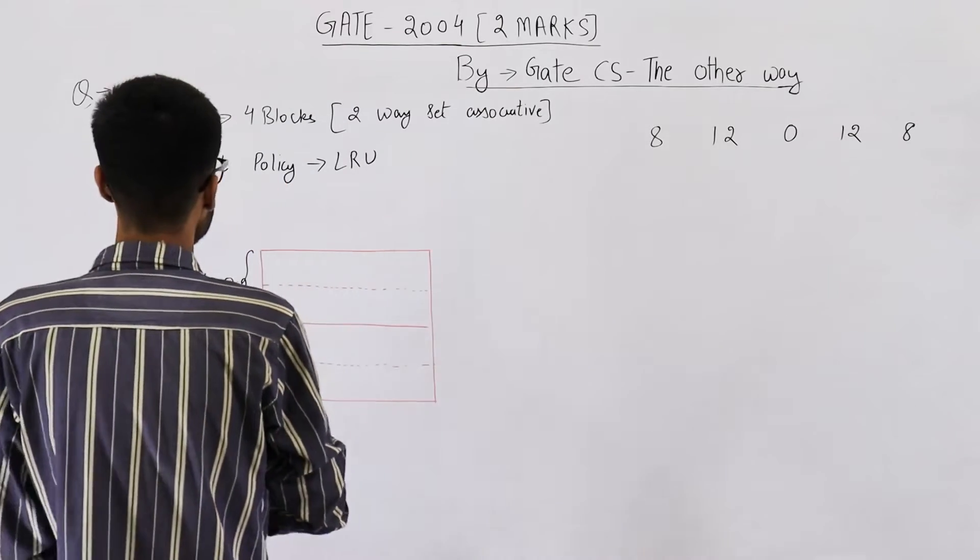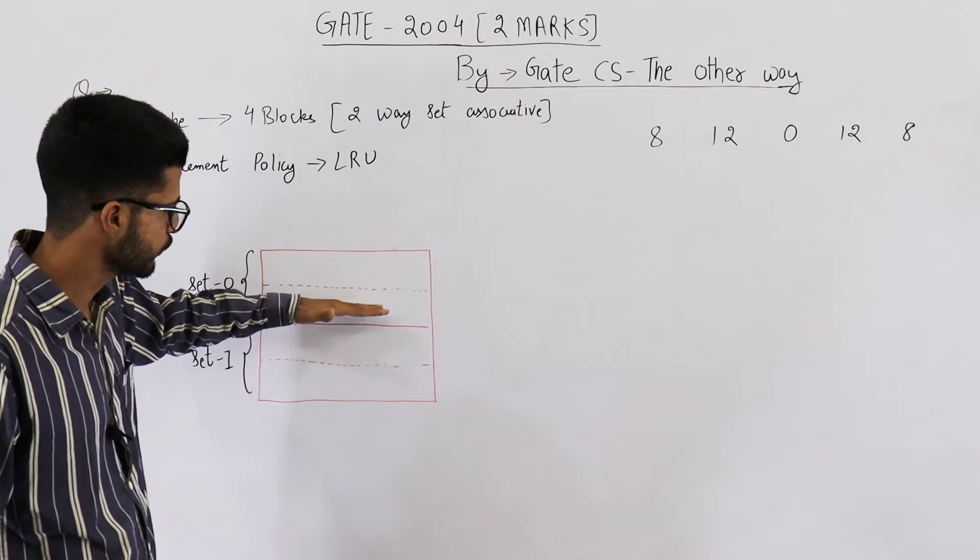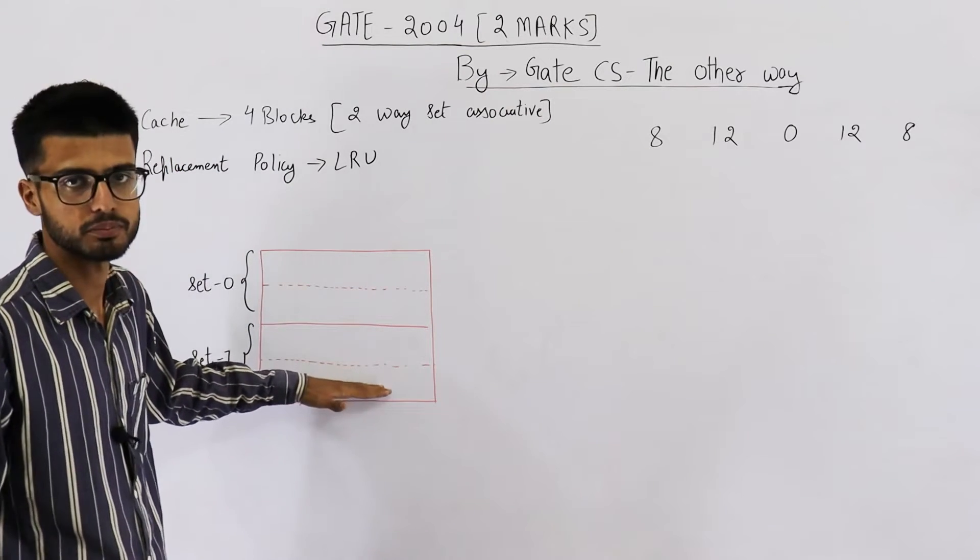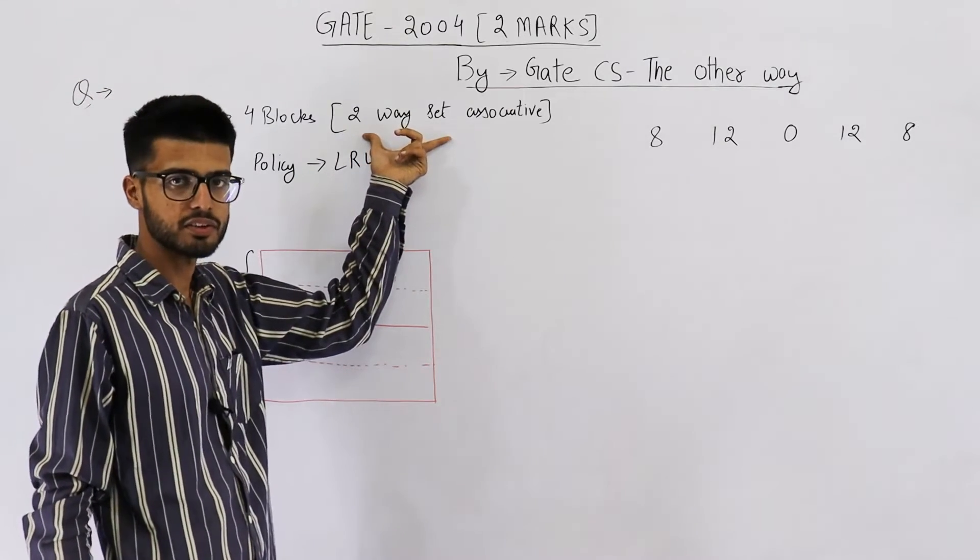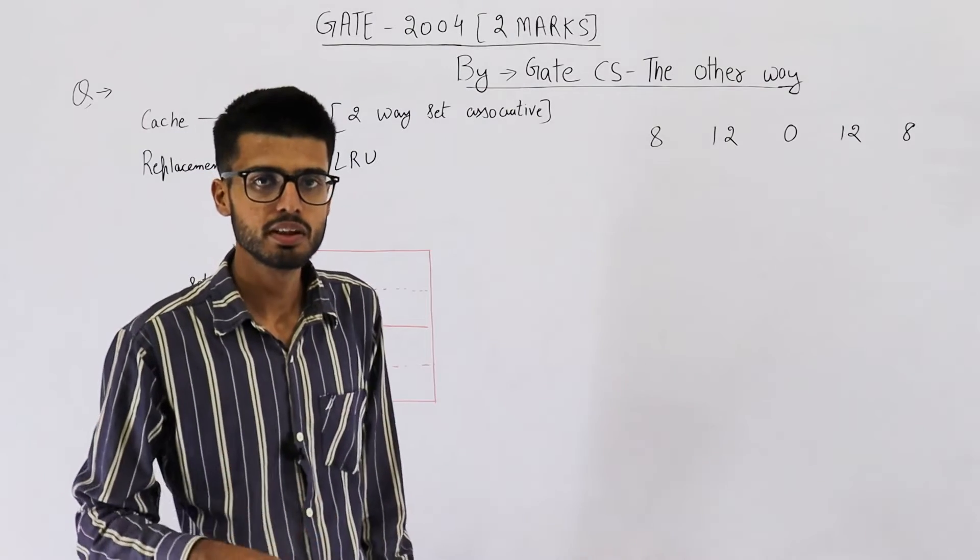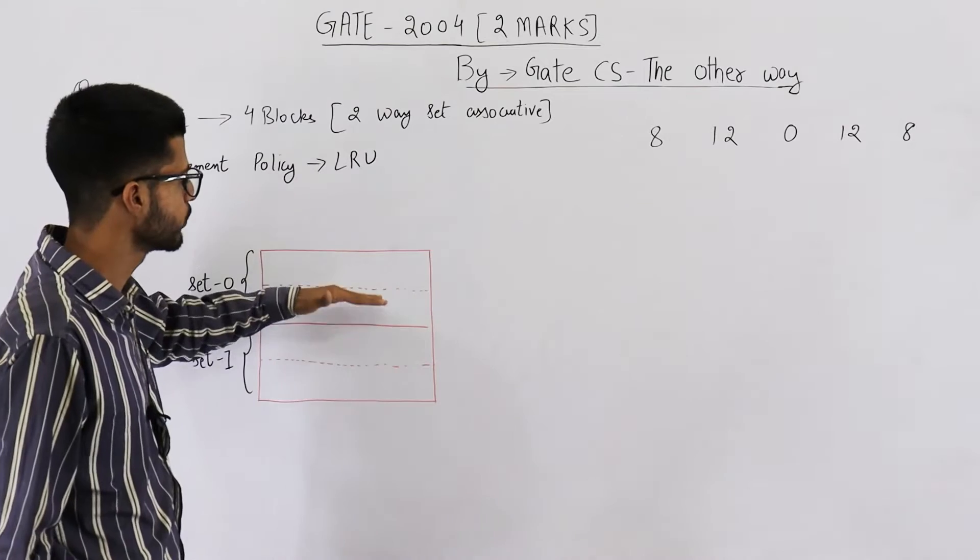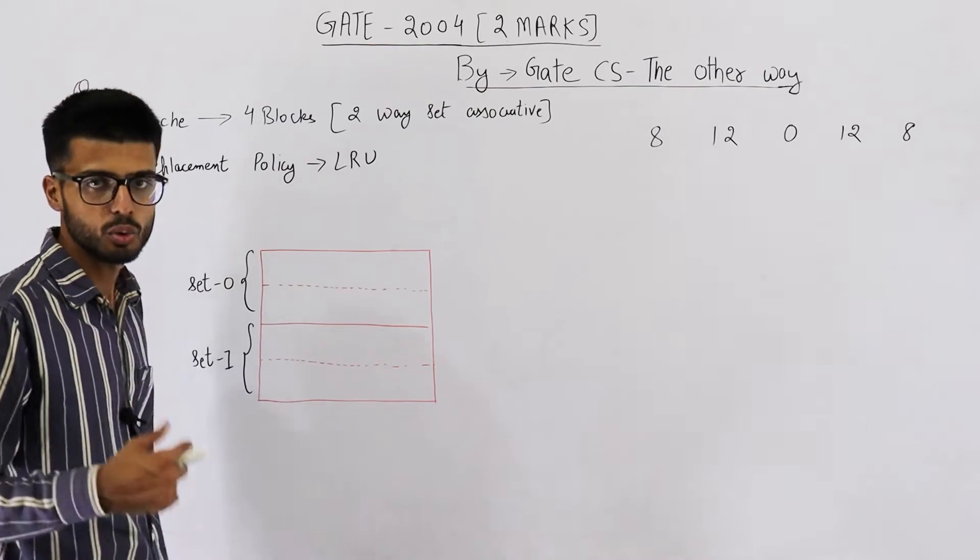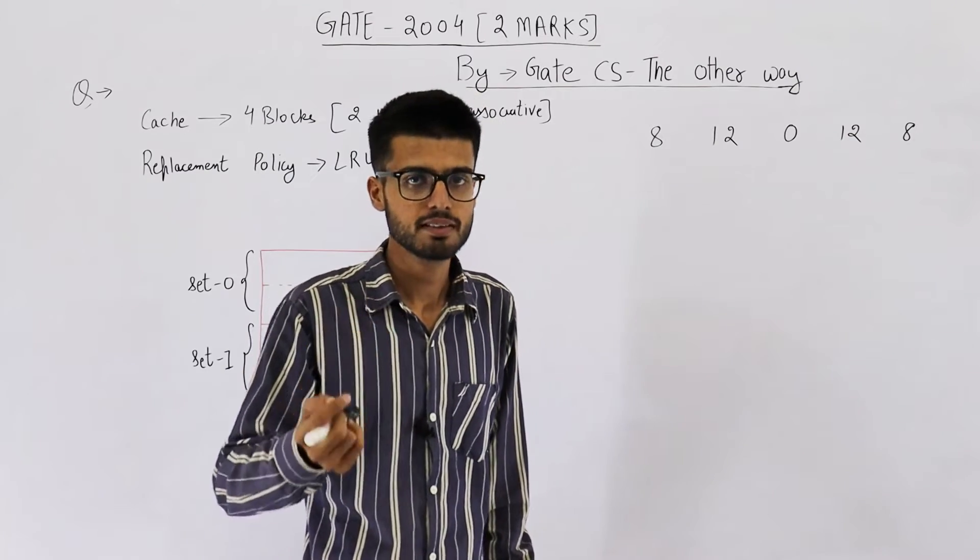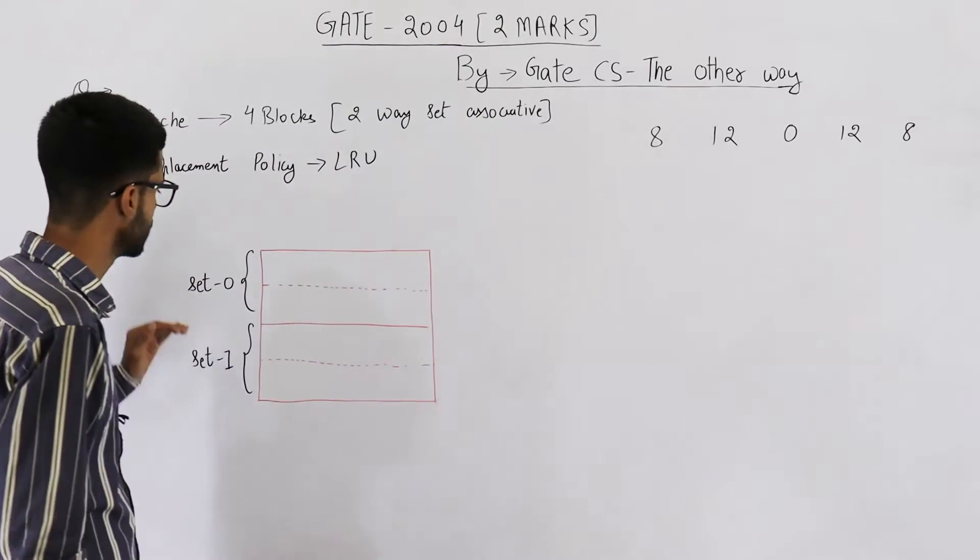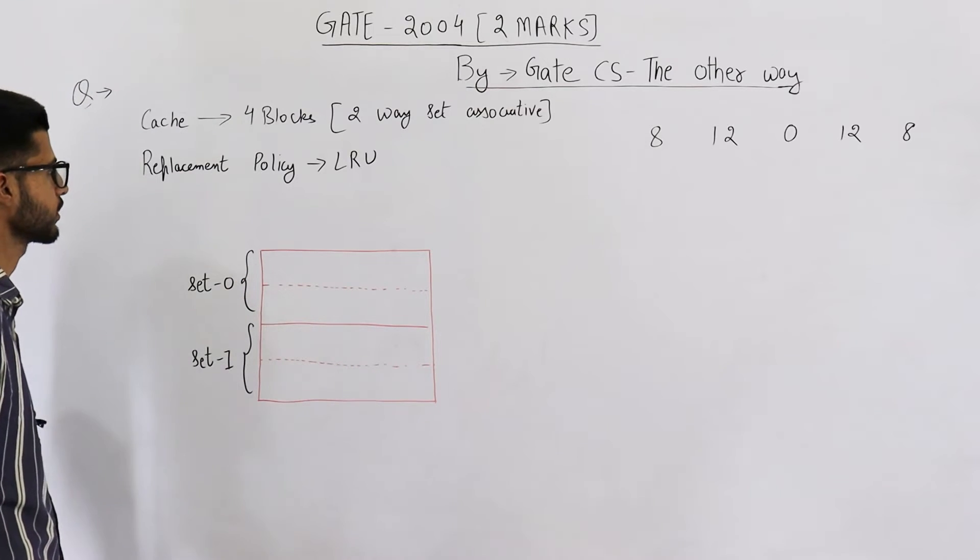Also they are saying cache has 4 blocks. It's a two-way set associative cache. These are the 4 blocks of cache. Saying that it is a two-way set associative cache automatically means there will be only 2 elements in 1 set. So 2 blocks in 1 set. Total we have 4 blocks. If we place 2-2 blocks in a set, how many sets will we have? There will be only 2 sets, each containing 2 cache blocks or 2 cache lines.